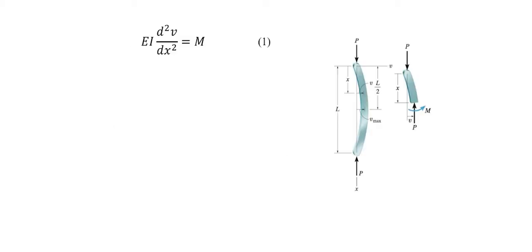Consider an ideal column that is pin supported. The goal is to determine the critical buckling load for this column. The ability of the column to remain stable when subjected to an axial load depends on its ability to restore itself when subjected to bending. From chapter 12, the differential equation that relates the internal moment in the column to its deflected shape can be written as follows.